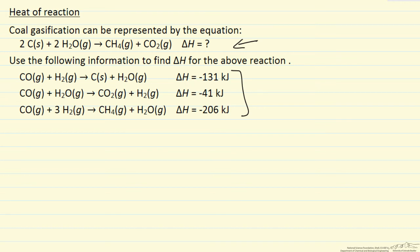So if we look at these reactions, the first thought would be to take minus 2 times this reaction in order to get the 2 carbons and 2 waters on the left side, and then we would need 1 times this reaction to get a methane on the right.